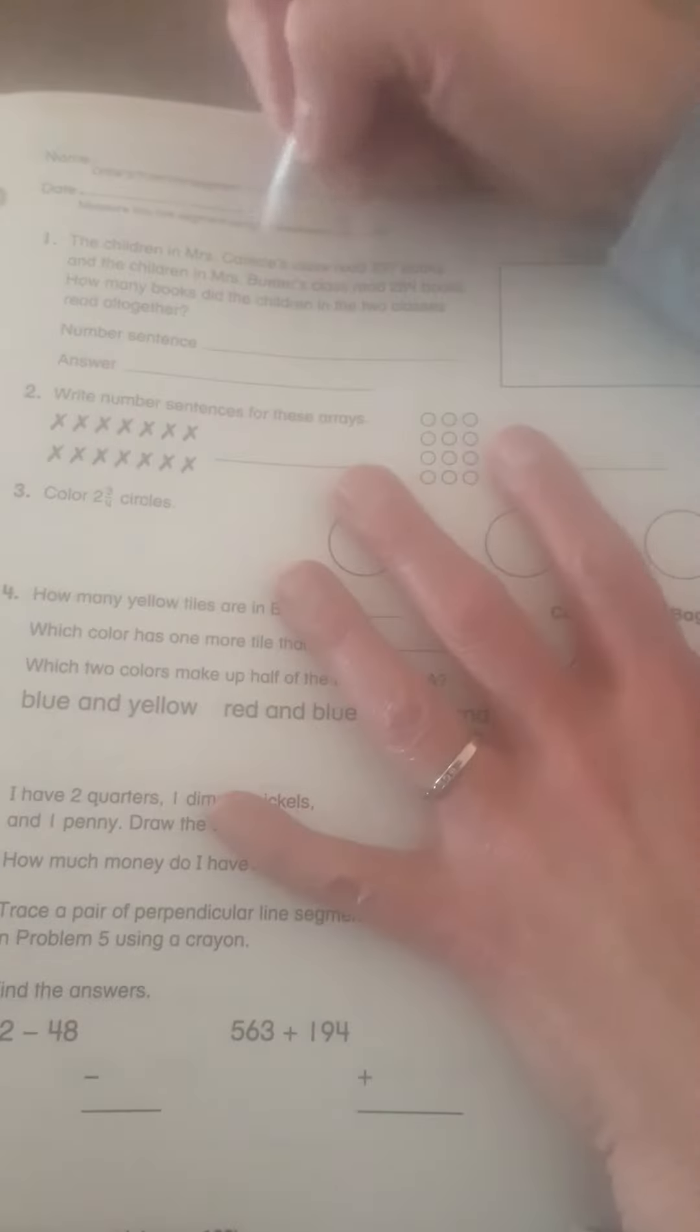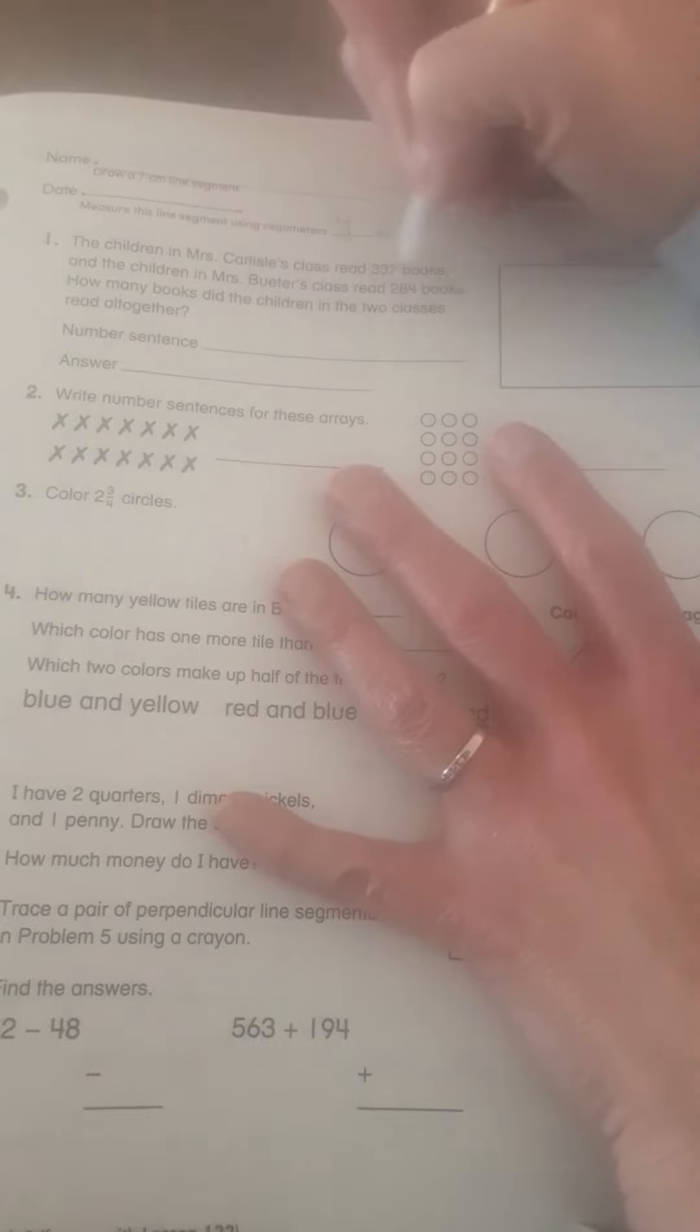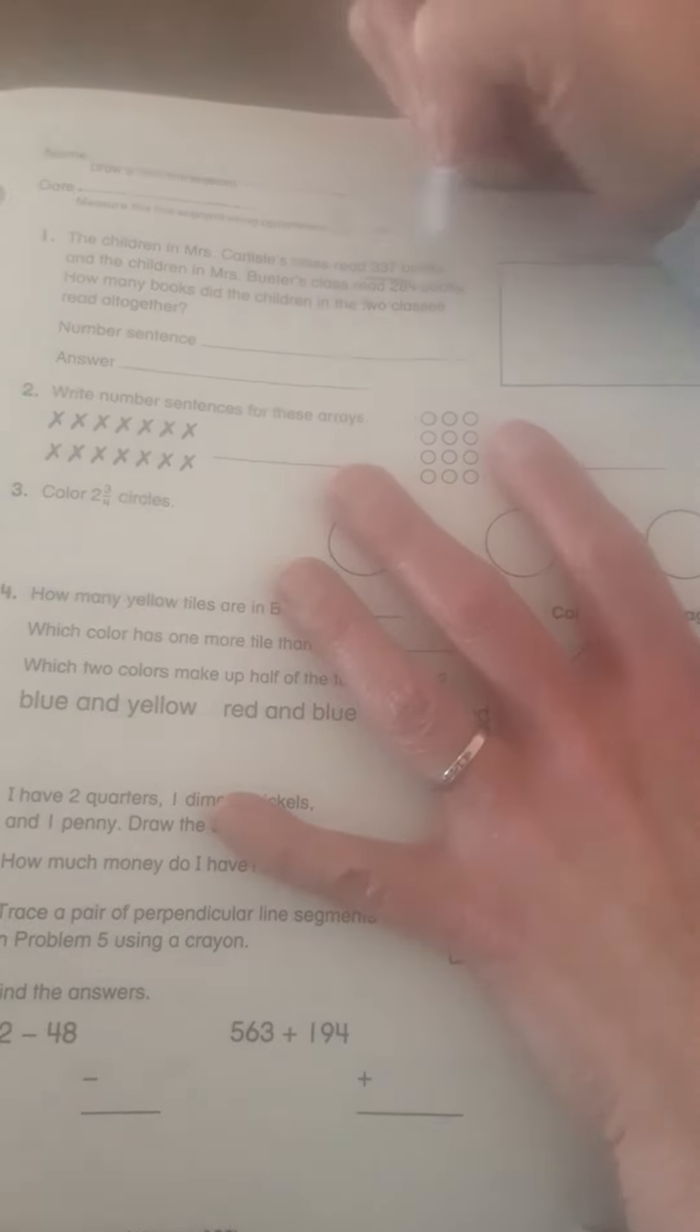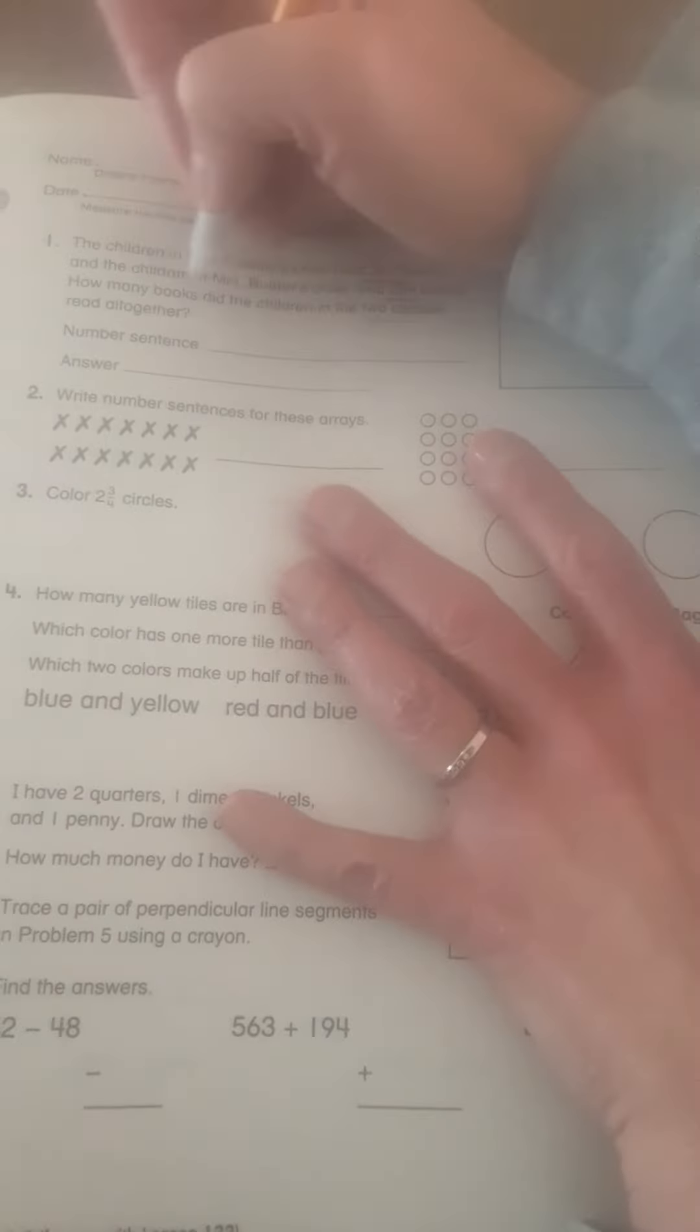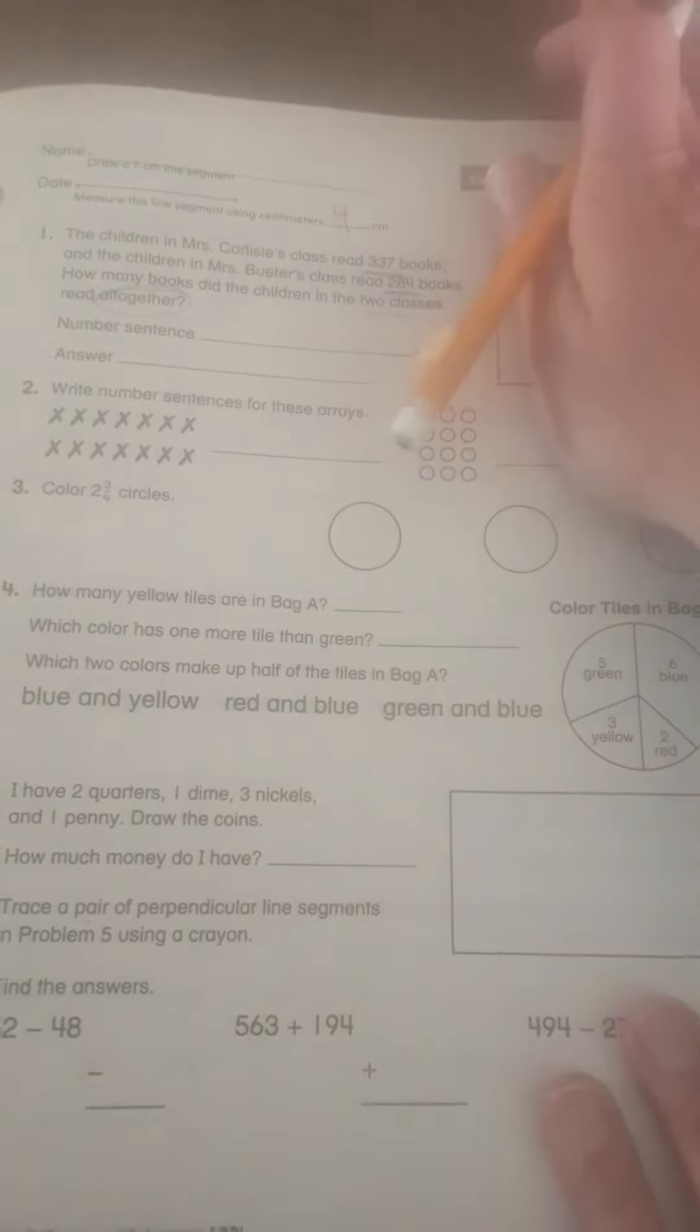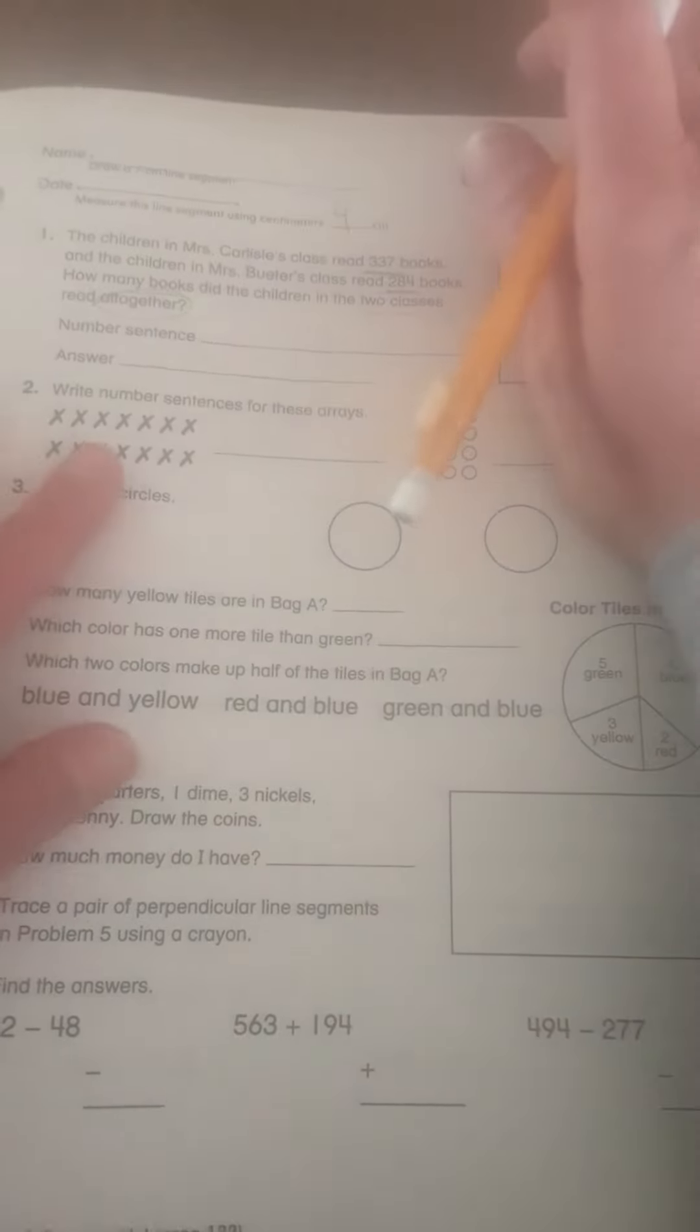And I have 4 cm. The children in Ms. Carlisle's class read 337 books, and the children in Mrs. Buter's class read 284 books. How many books did the children in the two classes read all together? All together. So all together means we're going to do addition.